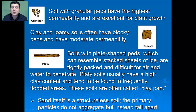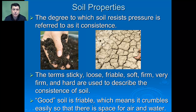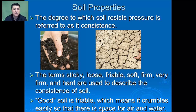Sand itself is a structureless soil — the primary particles won't aggregate together but instead will fall apart. The degree to which soil and its structure resists pressure is referred to as its consistence. Terms like sticky, loose, friable, soft, firm, very firm, and hard are used to describe a soil's consistence. Good soil is friable, meaning it crumbles easily so there's space for air and water to move. Farm and construction machinery or even a herd of cattle can put great pressure on the soil, so consistence is important when considering how land should be managed.